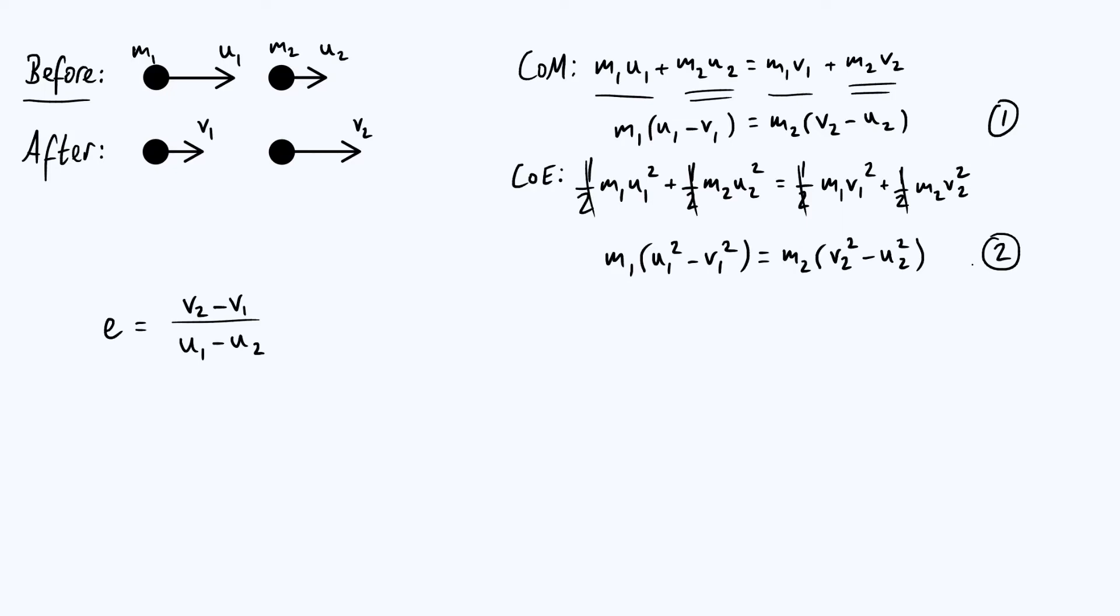Now, what we can do with this, notice these two equations have pretty similar forms and we can actually make the masses completely cancel out by dividing one equation by the other. So if I take equation 2 and divide it by equation 1, what's going to happen is the m1s will cancel on the left, and we'll get (u1 squared minus v1 squared) over (u1 minus v1). And similarly, on the right-hand side, the m2s will cancel and you'll get (v2 squared minus u2 squared) over (v2 minus u2).